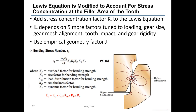Later researchers modified the Lewis equation to account for a stress concentrator at the tooth fillet. The combined stress concentration factor K_T depends on five factors: overload K_O, size K_S, gear mesh alignment K_M, tooth impact K_B, and rigidity K_V. The bending stress number is also inversely proportional to the face width F and a geometry factor J — an empirical factor based purely on the number of teeth in the pinion and gear.